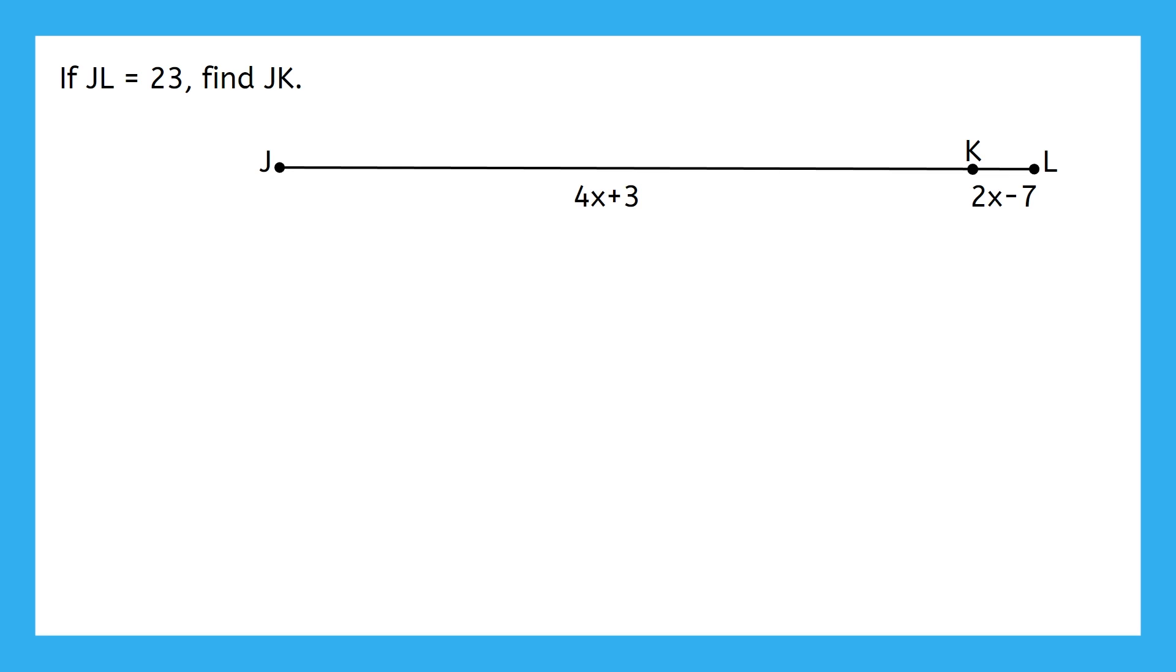We know from the segment addition postulate that JK plus KL equals JL. We can substitute our expression for JK into the formula, along with our expression for KL. And we know that JL is 23, so we can substitute that in too. I see algebra here. Why don't you pause the video and see if you remember how to solve this for X.